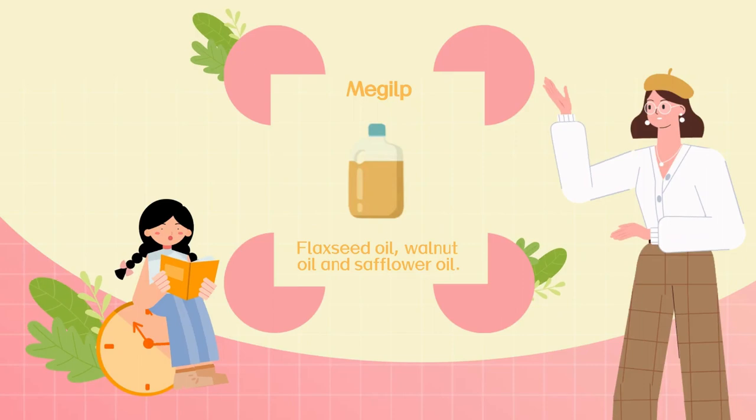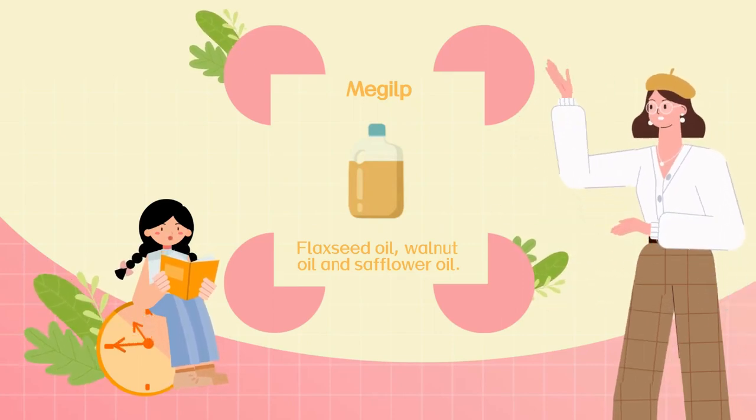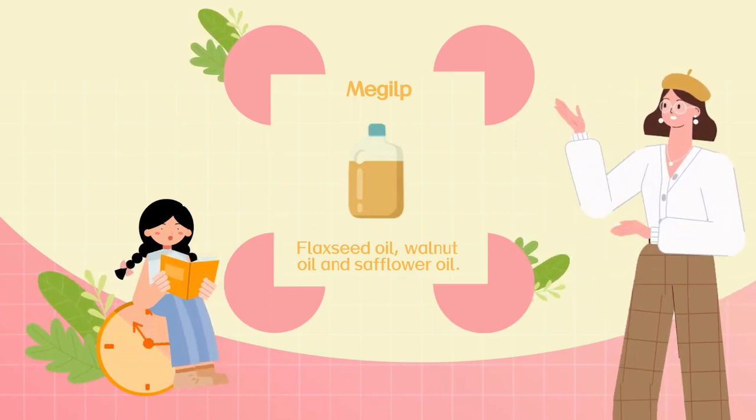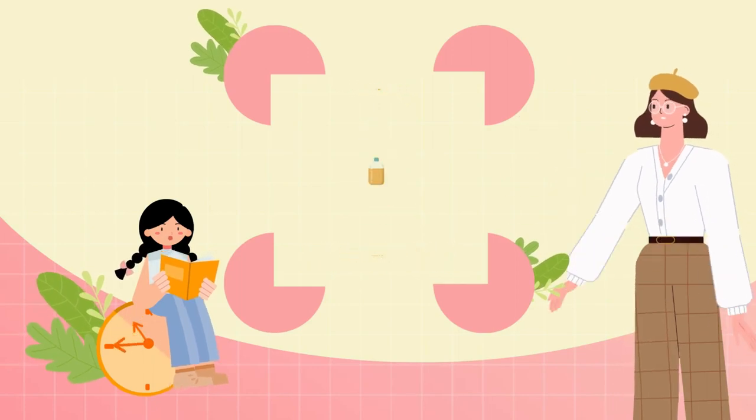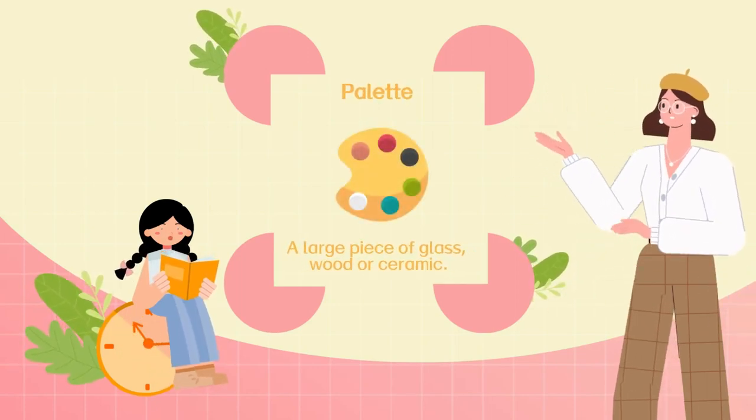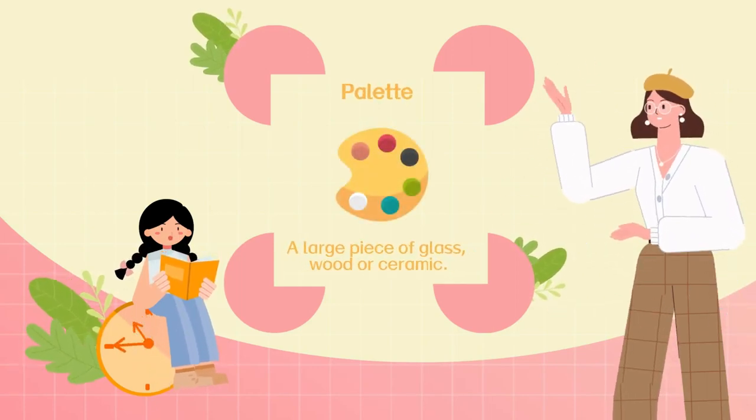Oil paints are often mixed with linseed oil or other solvents to make the paint thinner and dry faster or slower. Make sure it's big enough for what you're doing. You need enough room to mix paints.